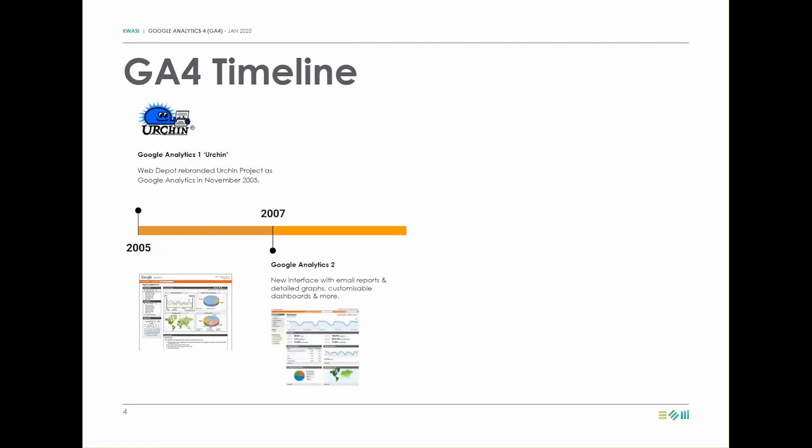In 2007, Google released their new version of Google Analytics which featured a new interface with email reports and detailed graphs, customizable dashboards, and plain language descriptions for easier use. Later in 2009, Google introduced an asynchronous version enabling faster loading times with improved data collection.